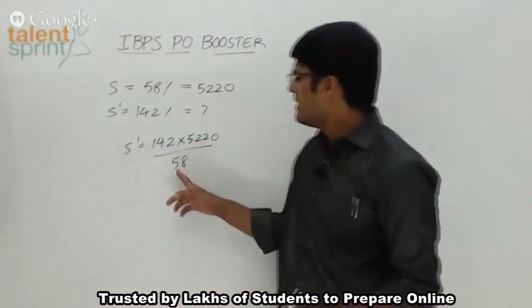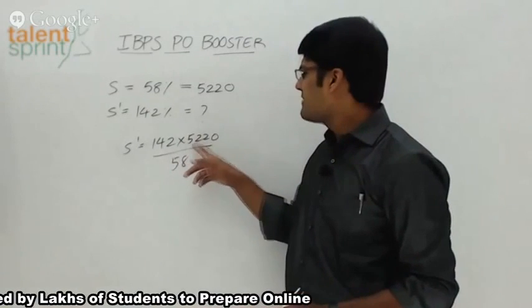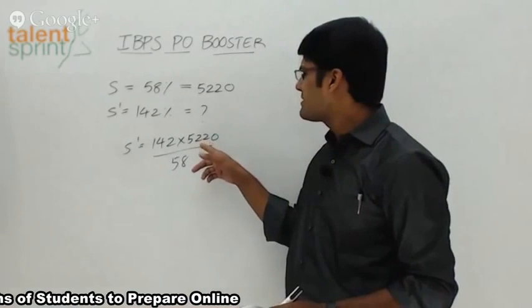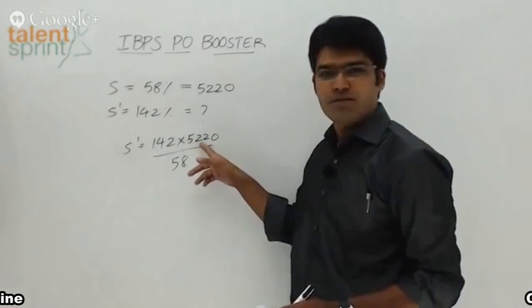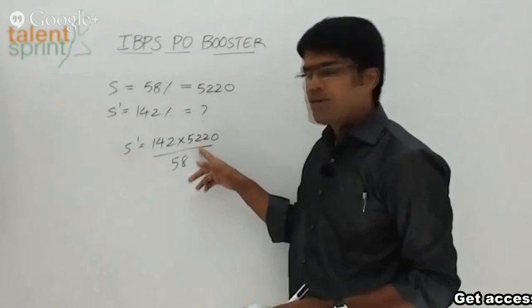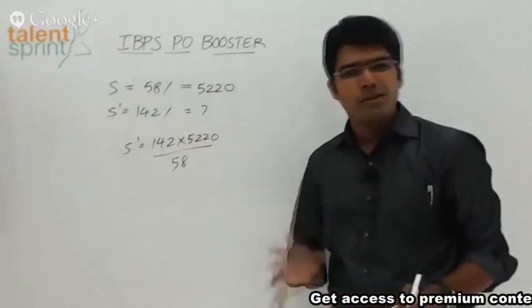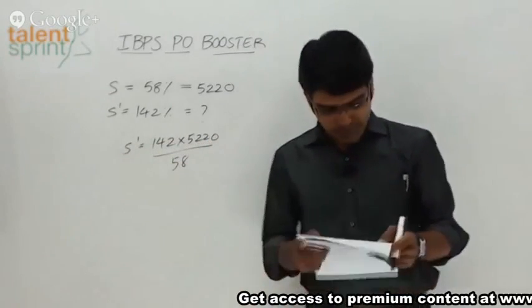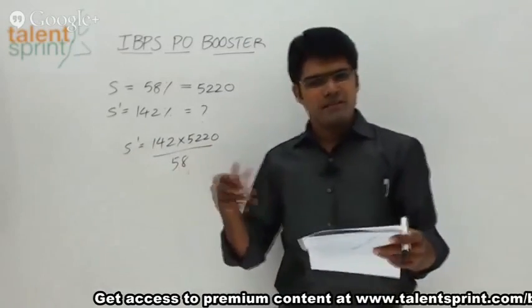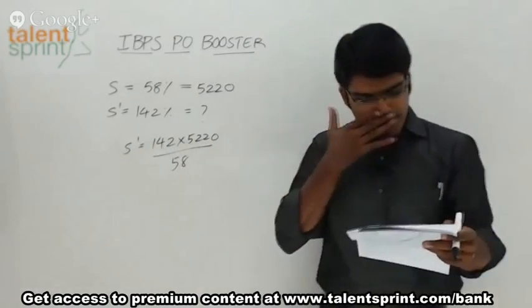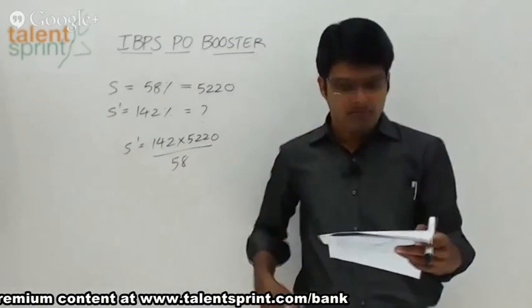This should be 9 times. 580 minus 58 will give you 522, so 9 times. 19 into 142 will give you the answer. So 1420 minus 142 — that is 10 times of course.